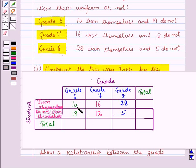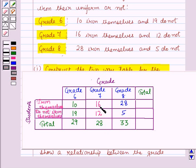And now we will write the total of each row and column. The total of the first column is 29, the second column is 16 plus 12 which is 28, and the third column is 33. The total of all frequencies in the first row is 54 and in the second row is 36. Now 54 plus 36 is 90, and 29 plus 28 plus 33 is also 90.